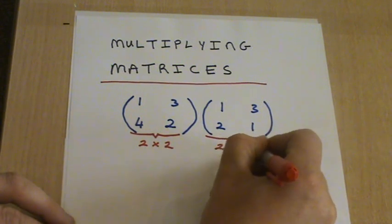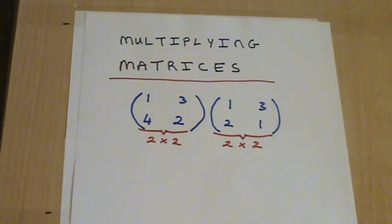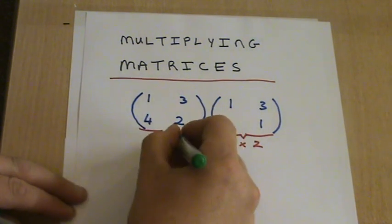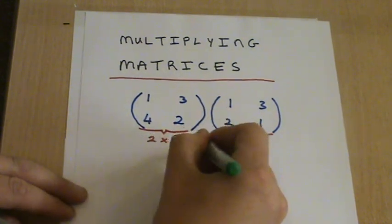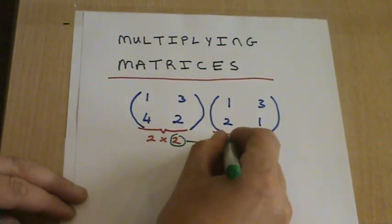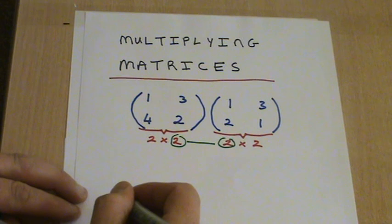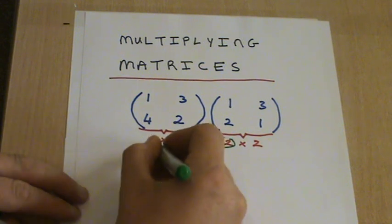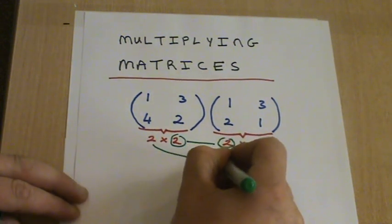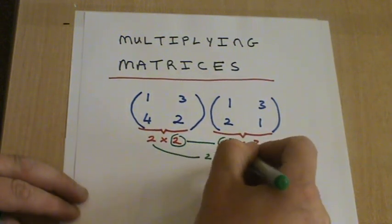We can multiply these two matrices together because these two numbers are the same. And the resulting matrix is going to be a 2x2 matrix because of these numbers.